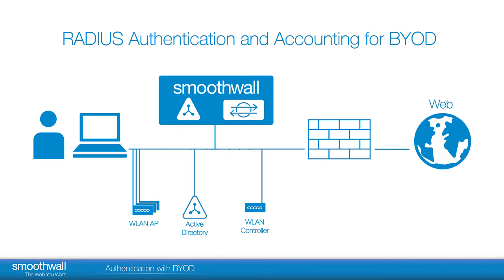RADIUS authentication and accounting for BYOD only works for Active Directory — I want the Smoothwall to be the authenticator. See our video on setting up an Active Directory. If you want BYOD without an Active Directory, your wireless controller must support framed IP addresses.